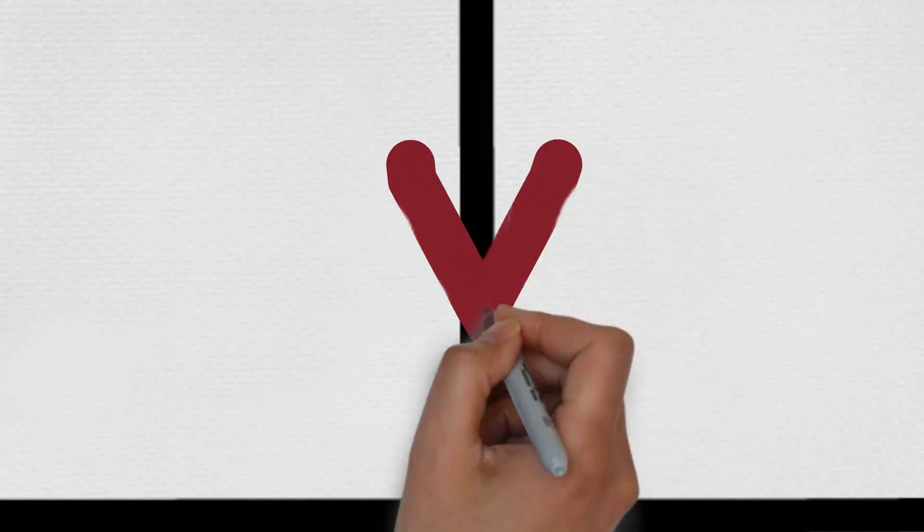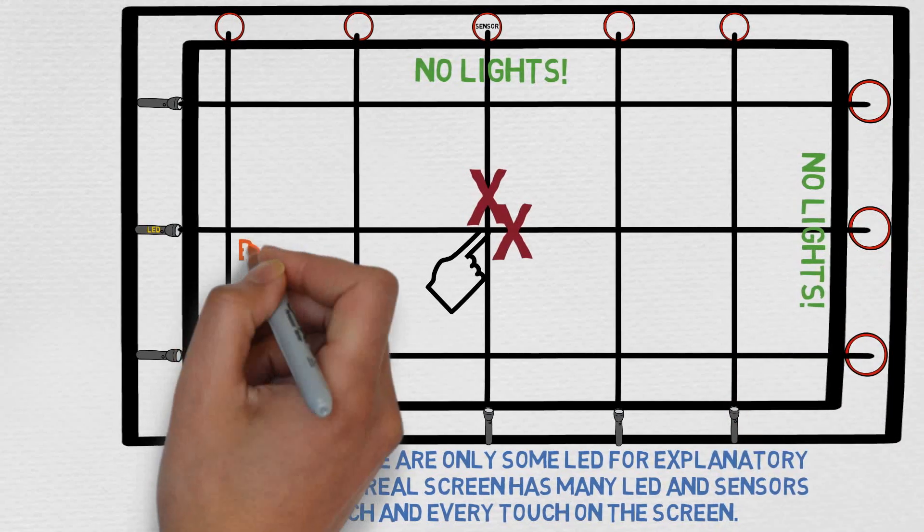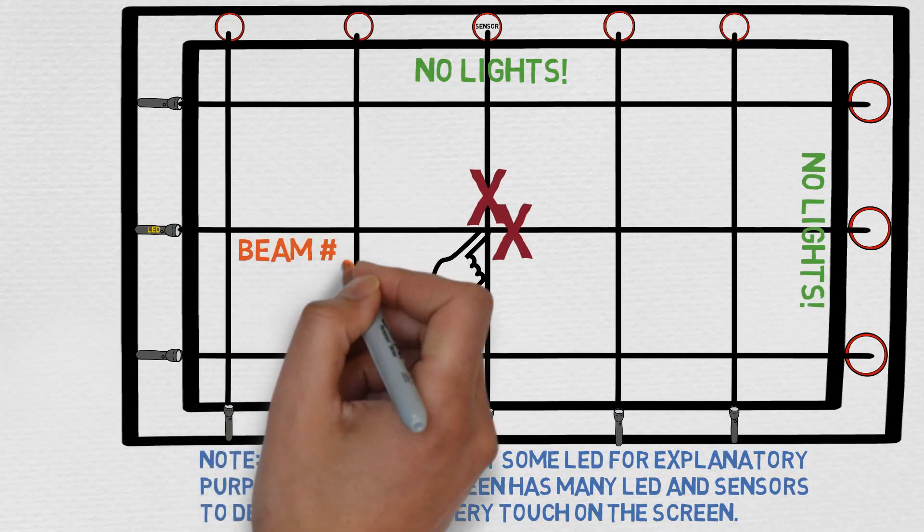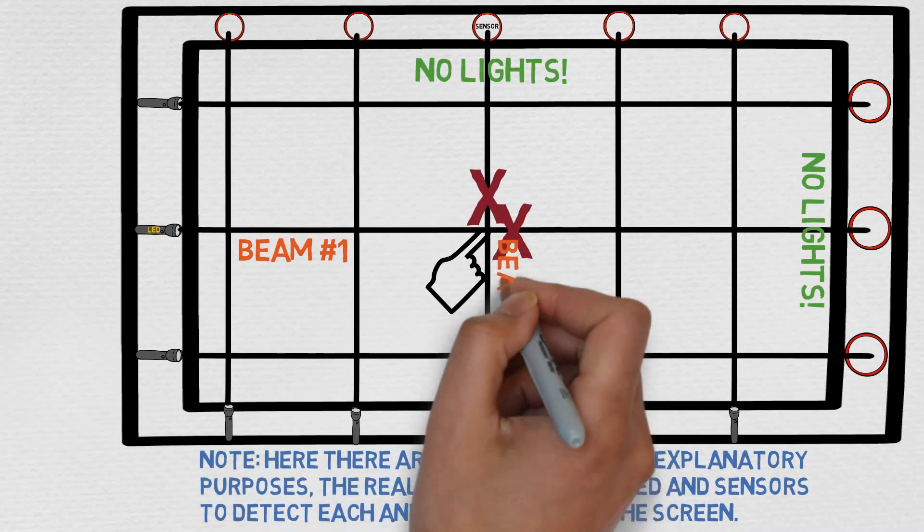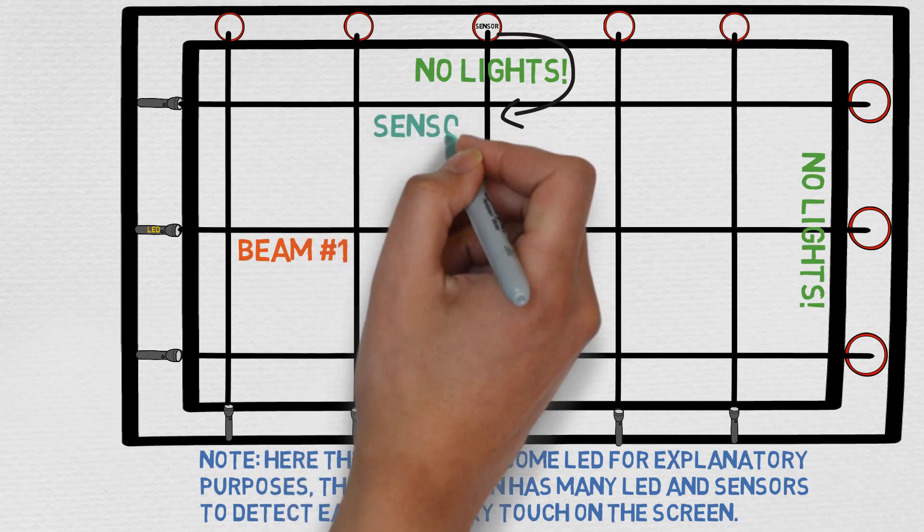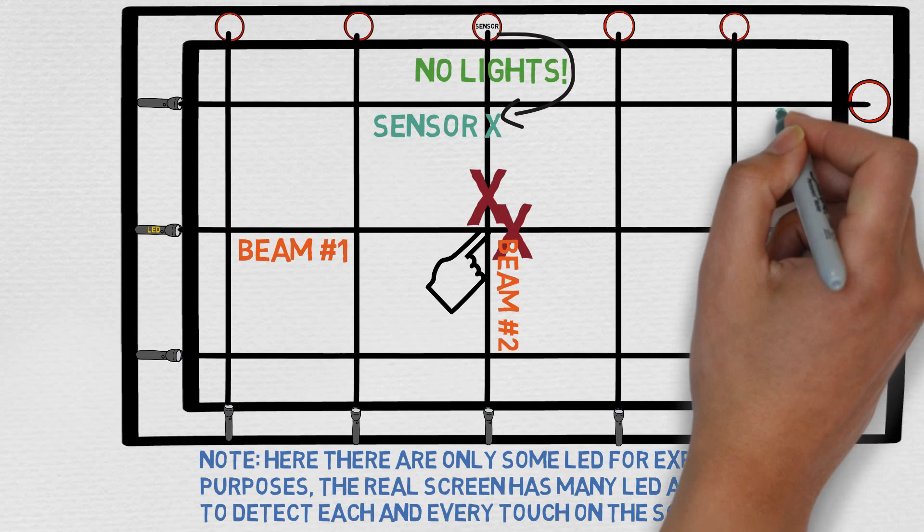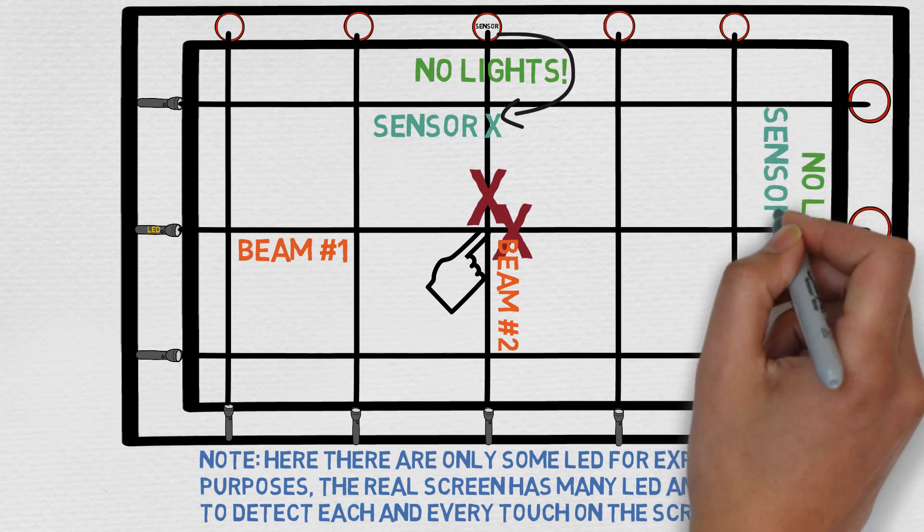When you touch the screen however, beams of light break and the sensors corresponding to that LED do not receive light and this change is detected by them. Here interestingly, two beams of light break through one touch, one from the horizontal set and the other from the vertical set. Hence, the touch makes two sensors stop receiving light. This provides X and Y coordinates for the screen which is determined by the processor and lastly, the action specified is performed.